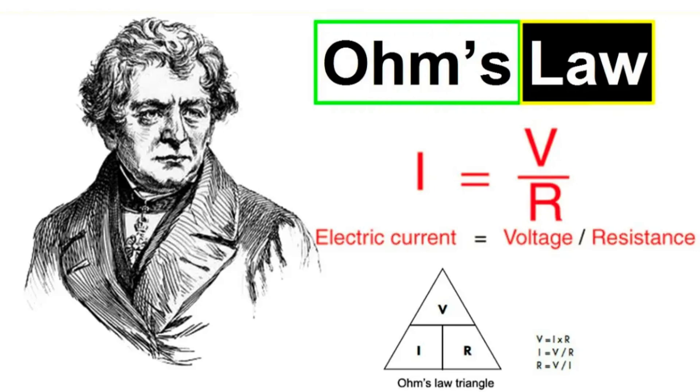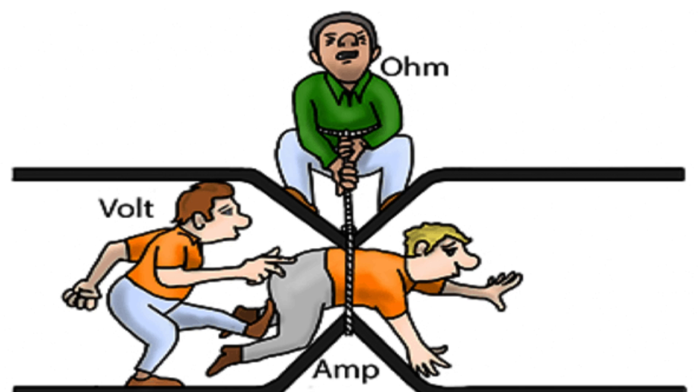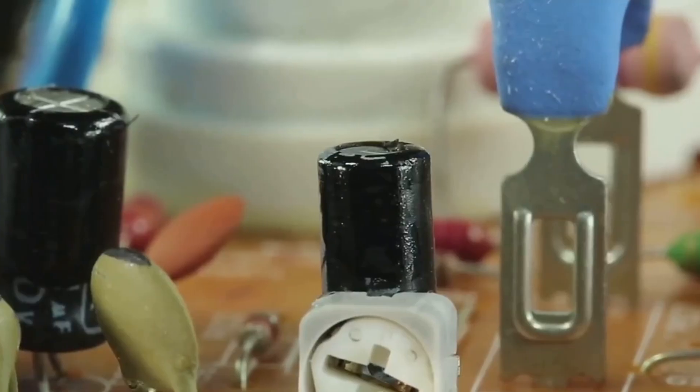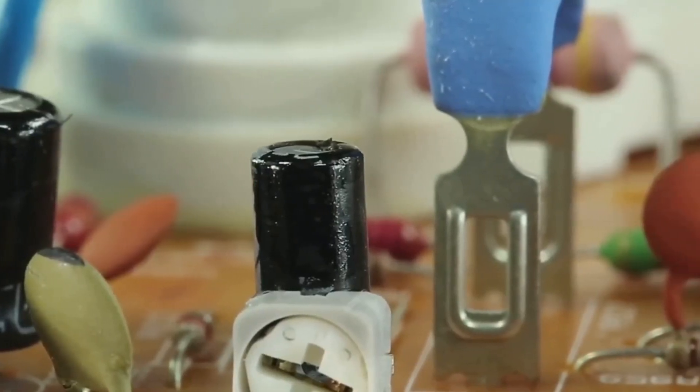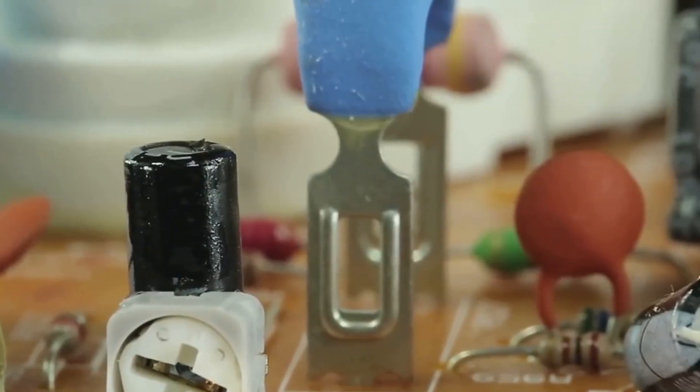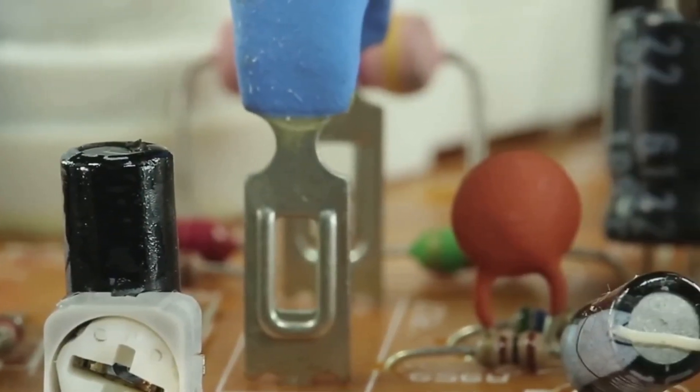Understanding Ohm's law helps us see that resistance plays a critical role too. It's like the resistance in a water pipe. The higher the resistance, the less current can flow through. In the world of electricity, the balance between voltage, current and resistance is a delicate balance. This balance determines whether the result is a harmless tingling sensation or a shock that could potentially be life-threatening.